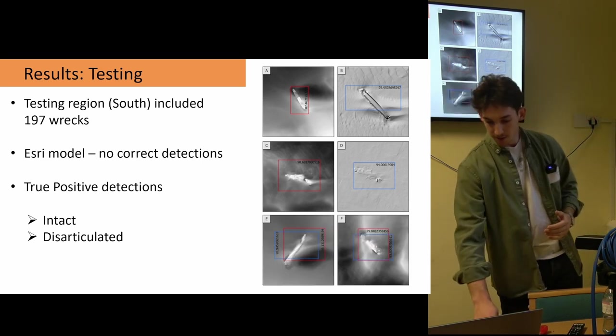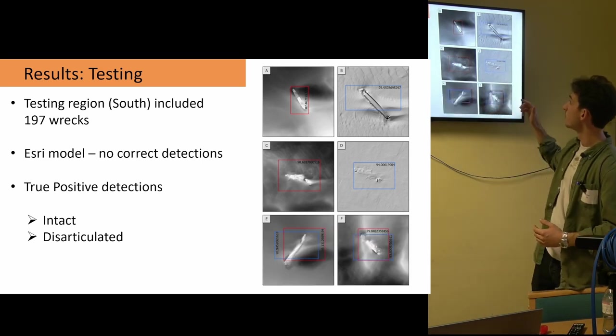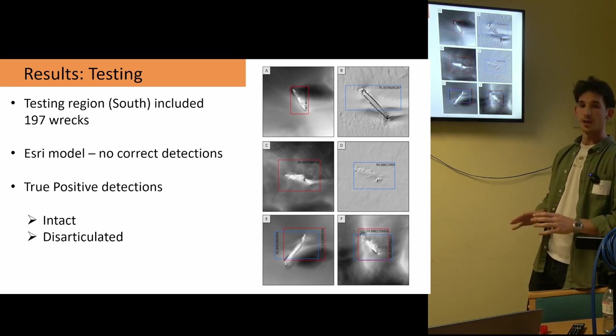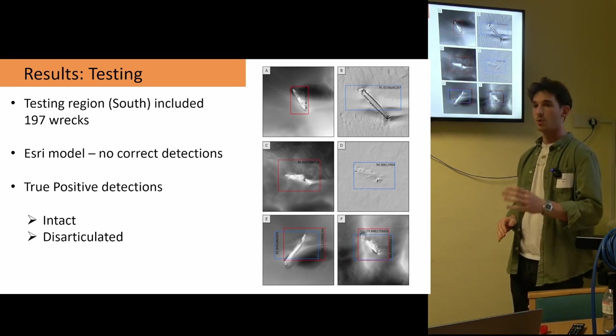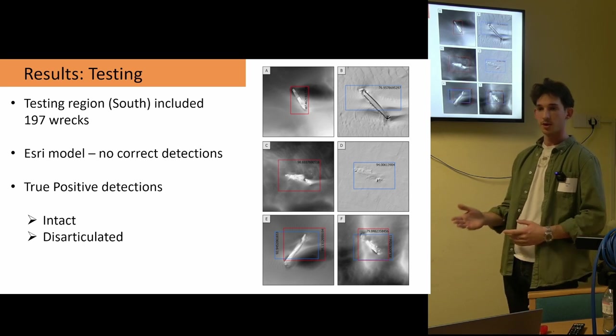And there was some overlap between their results as well. Actually, the top four, A to D, there was no overlap. So interesting questions starting to be raised about why one model is detecting them but not the other.